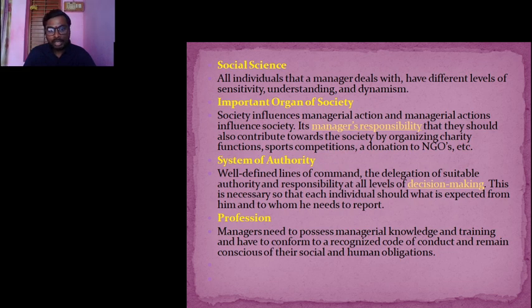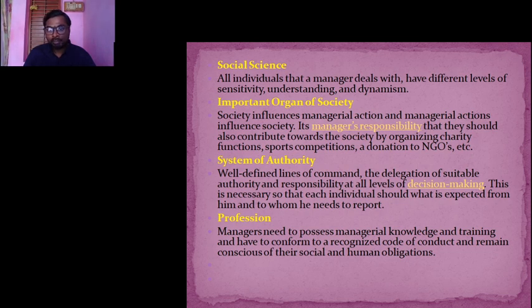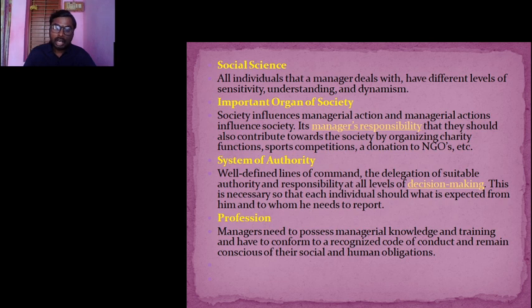Coming to system of authority: there are well-defined lines of command for every position and designation in the organization. The CEO has different rules, the manager has different rules, and subordinates have different guidelines. There is delegation of suitable authority and responsibility at all levels of decision making. It is necessary that each individual knows what is expected of them and to whom they need to report.